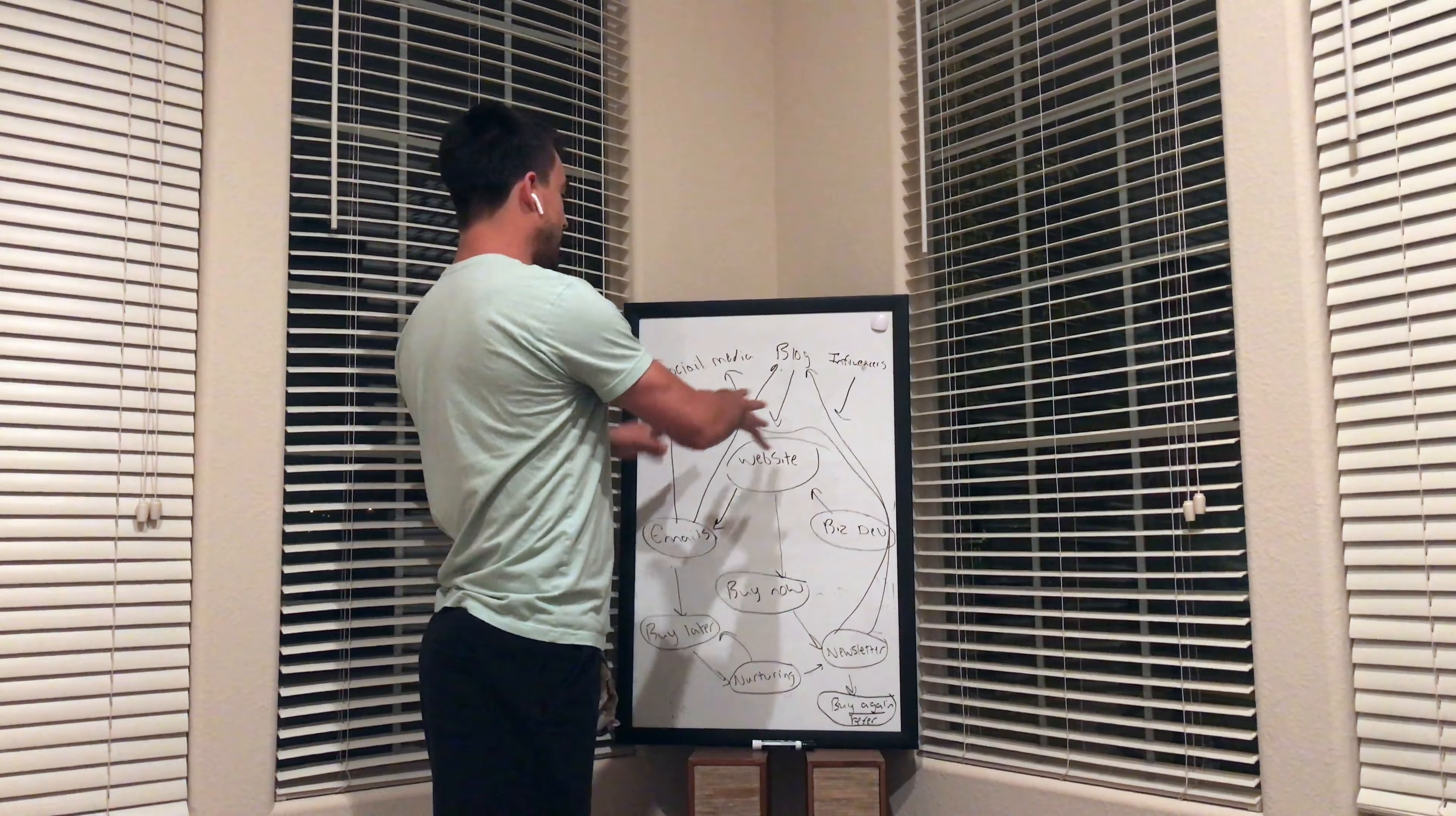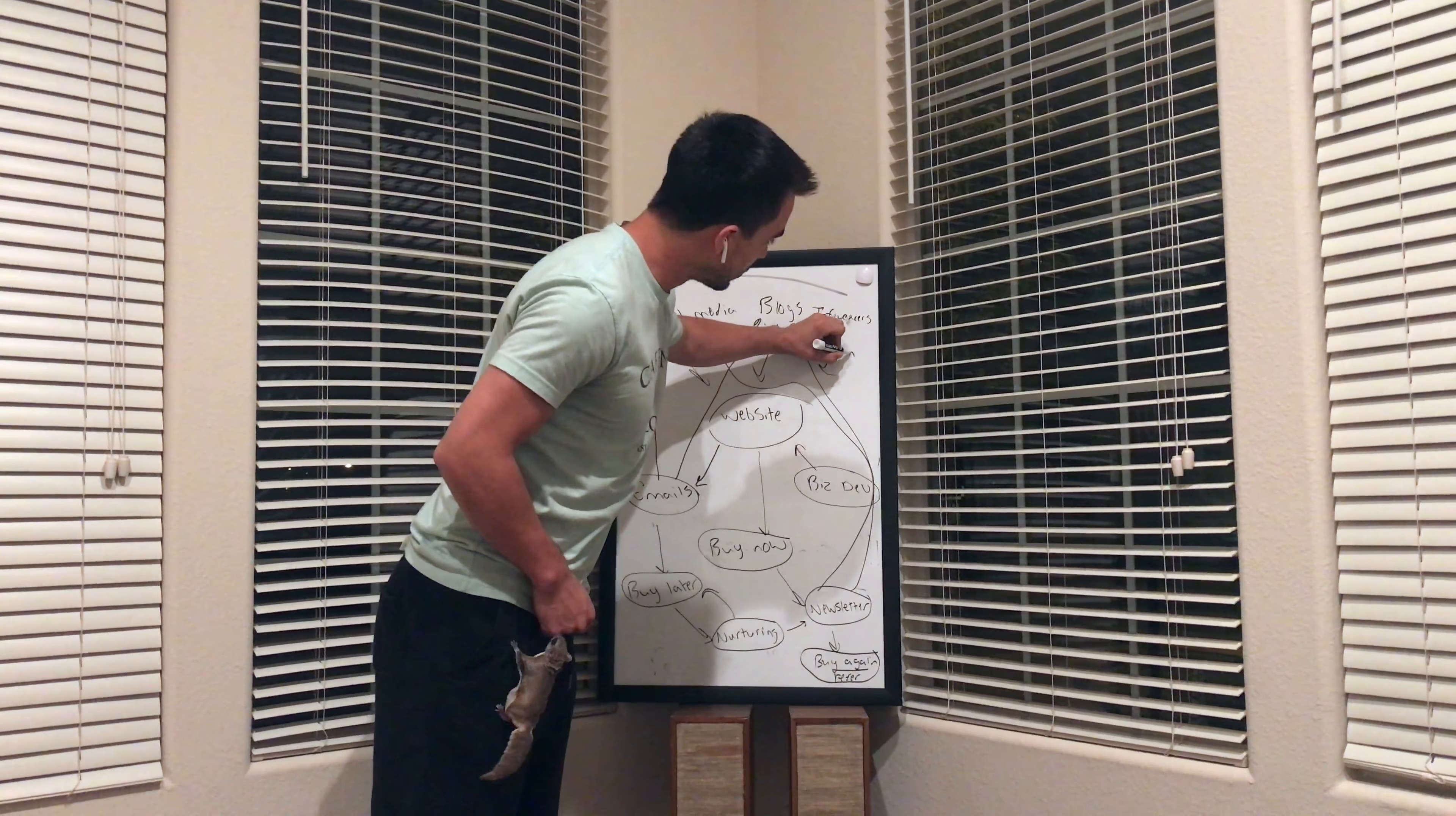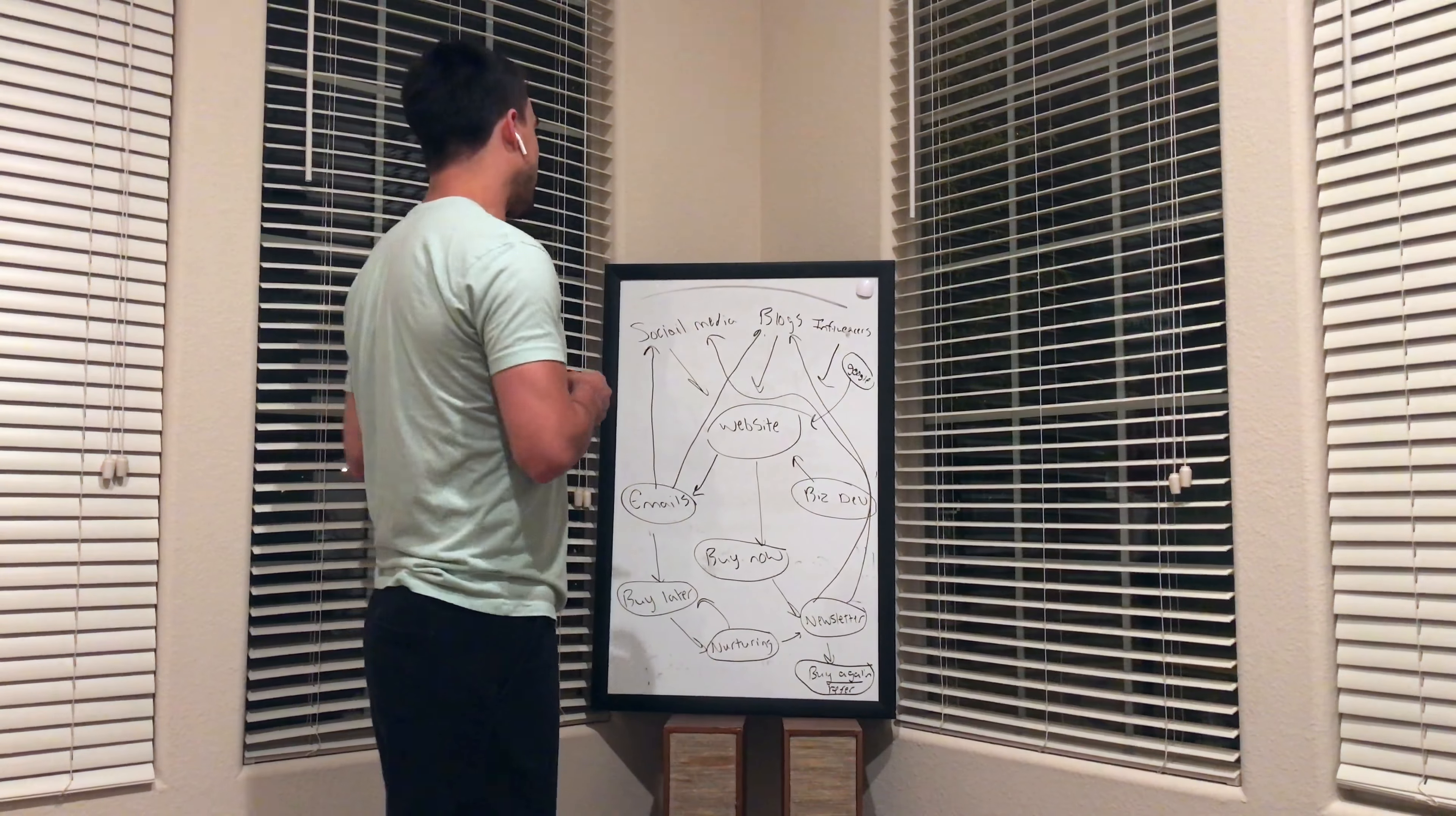So what we're gonna do today is we're gonna talk about how everything flows. In the beginning phases of the buyer journey, which is up here in this area, is where we have our social awareness phases. We have our social media, we have our blogs, we have our influencers, we can even throw Google over here. So these are all things that we're putting out there to build awareness around our brand, to provide content, to build a relationship, and to establish trust in the consumers that we're trying to market to.